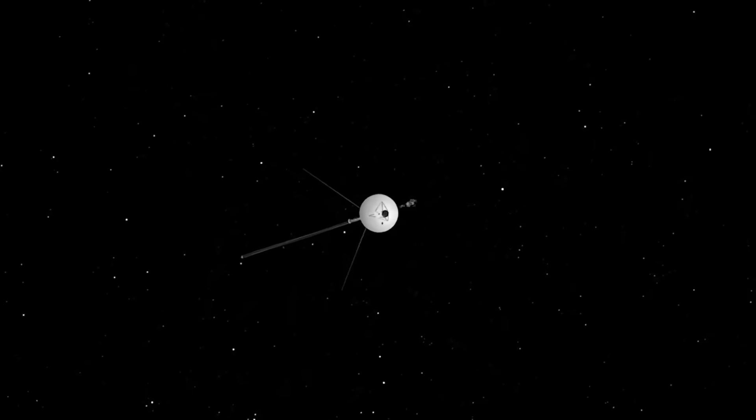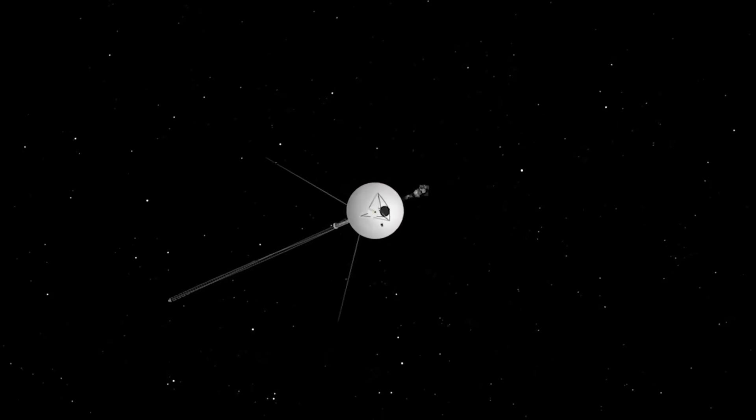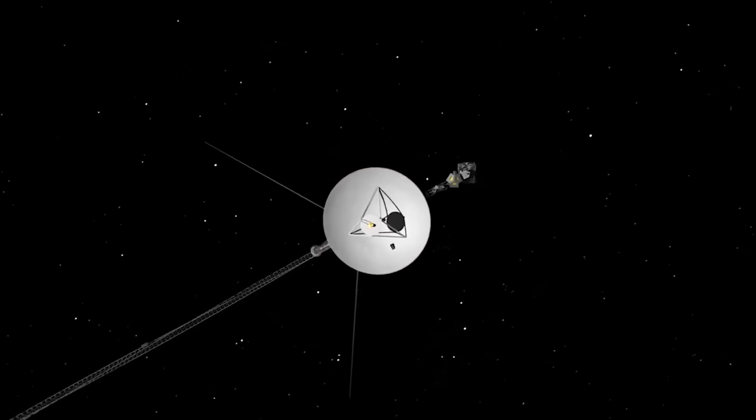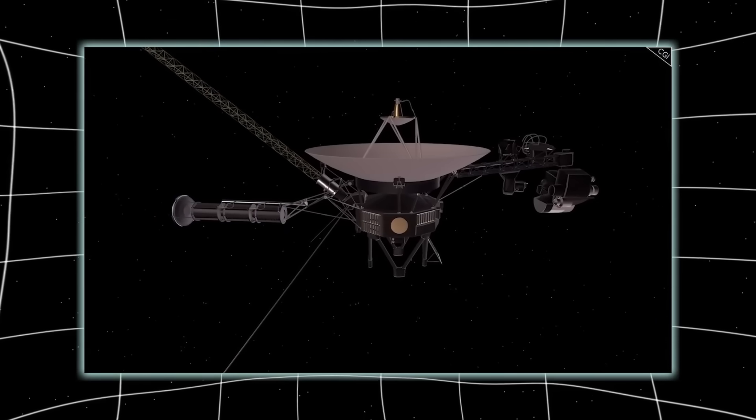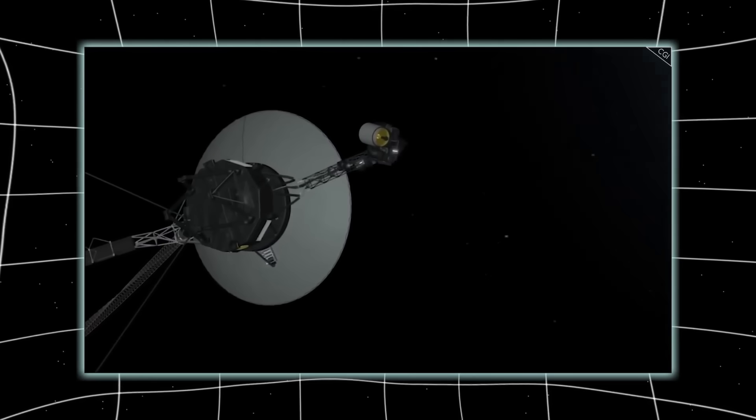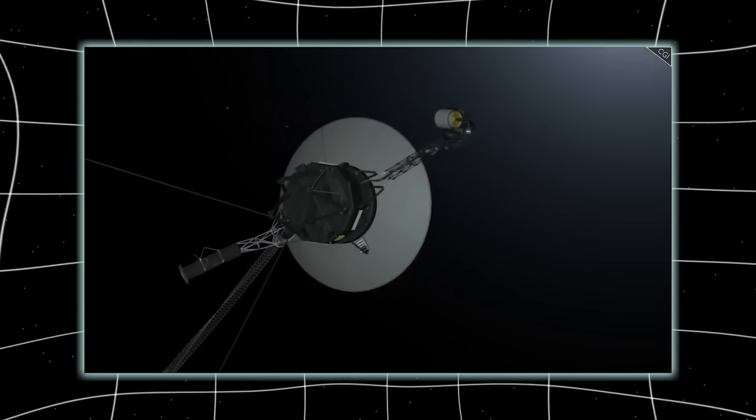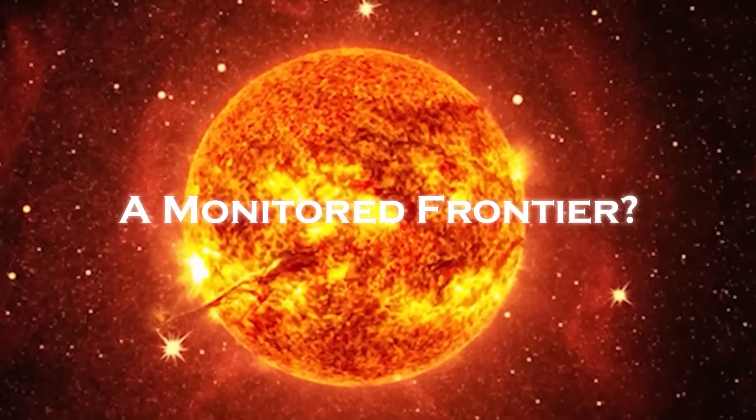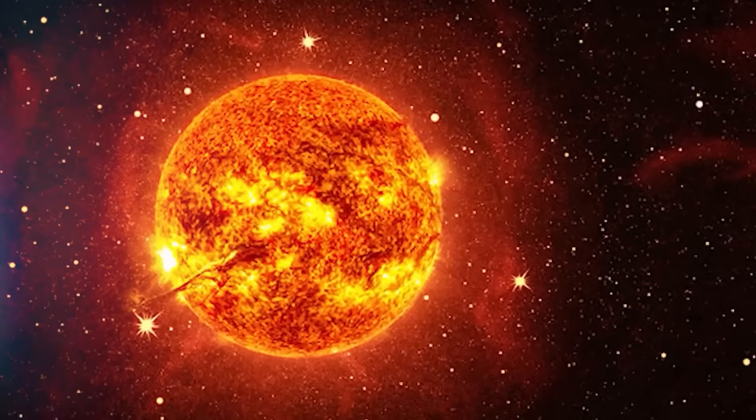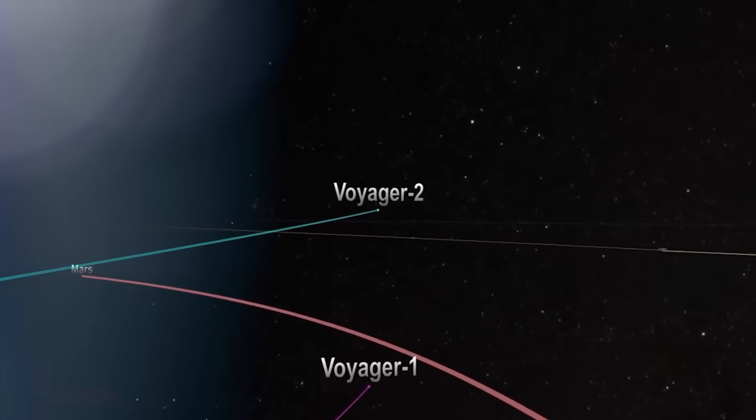This wasn't just a magnetic surprise. It was a paradigm shift. The idea that the galaxy's structure might already accommodate or even anticipate the sun's magnetic reach challenges every model of interstellar interaction. Suddenly, space didn't seem so chaotic. It seemed organized.